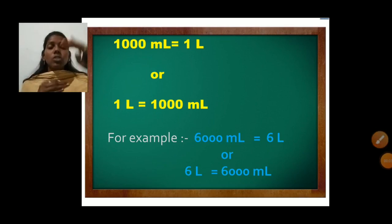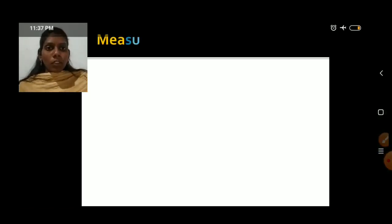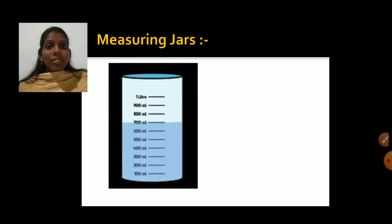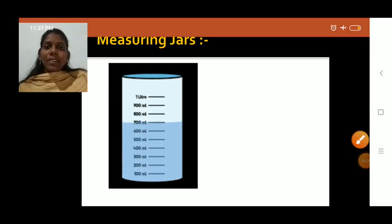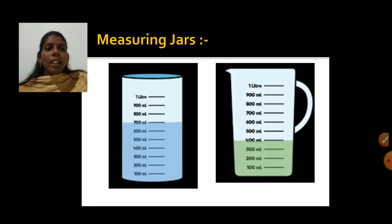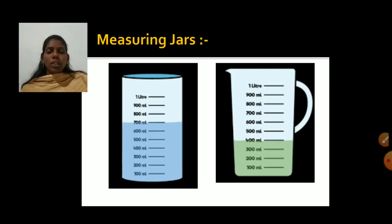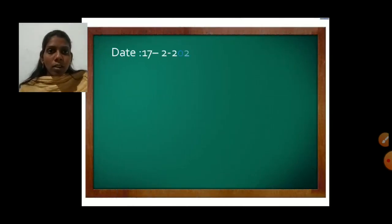Some measuring jars are used to measure liquids — to see how much liquid a container can hold or how much liquid is filled in it. Look at this picture: liquid is filled till 700 ml in that container. In the next picture, 400 milliliter of liquid is there. It is easy to measure how much liquid is in a container using a measuring jar.